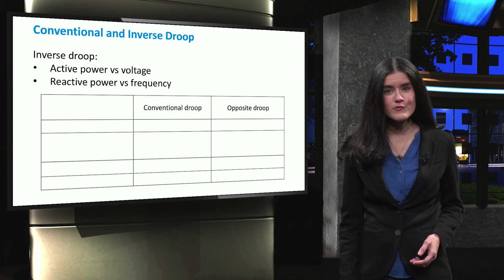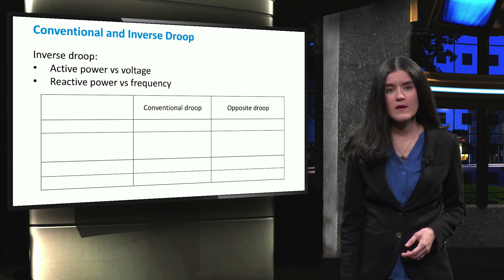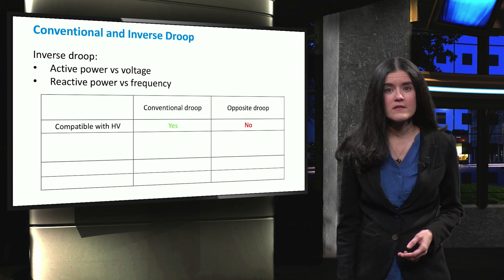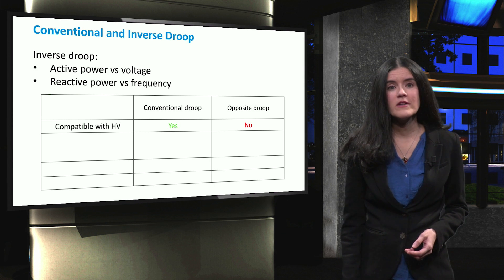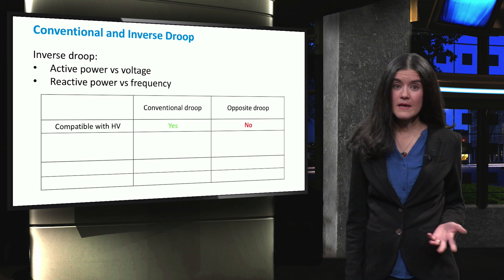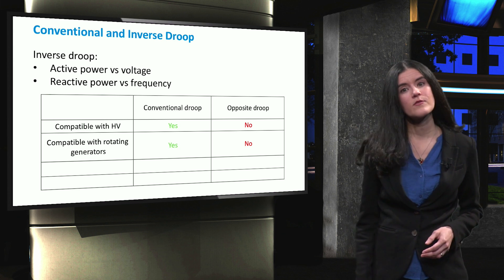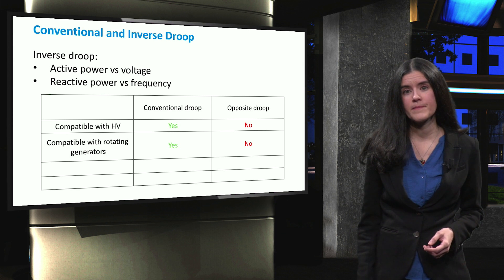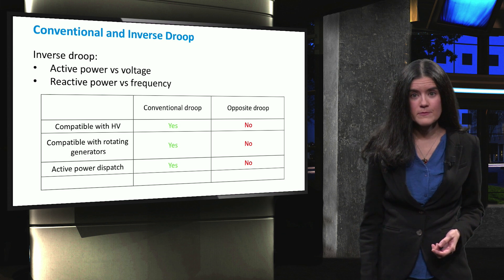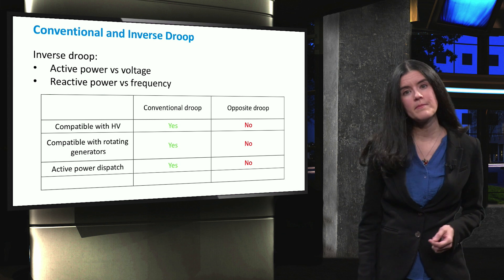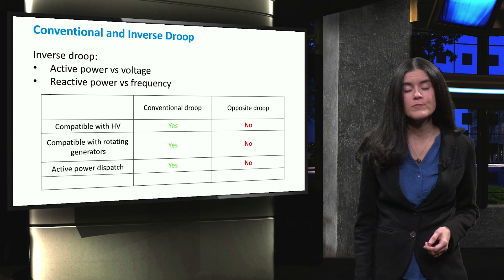The inverse droop control has a number of disadvantages. First of all, it is not compatible with high-voltage lines, which are mainly inductive as previously mentioned. The same holds true for conventional generators, in which the active power determines the rotor speed or the frequency. Also, the active power dispatch, which is performed by transmission system operators at very high grid levels, cannot be implemented through this opposite droop scheme.